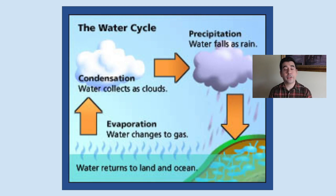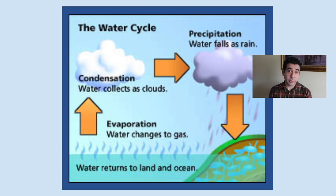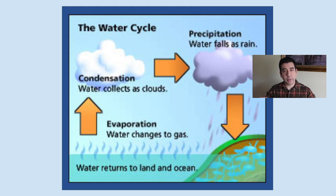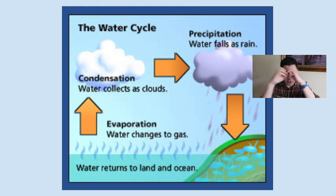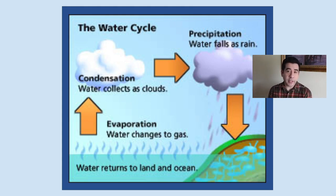In the water cycle, the sun heats up water that's on the land or in the ocean. The water, which is liquid, gets turned into a gas called water vapor, and the water vapor travels up into the air and condenses. All the water vapor comes together and collects as clouds. That part of the water cycle is called condensation.